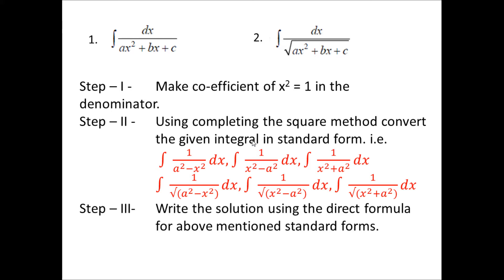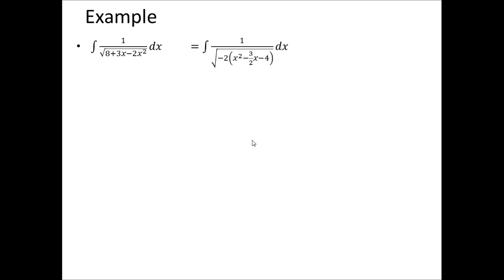Step number three is: write the solution using the direct formula for the above mentioned standard forms. We have already discussed the direct formulas for these standard forms. On the basis of these steps, let us take an example and try to solve a question. For example, find the integral of 1 upon square root of 8 plus 3x minus 2x squared.